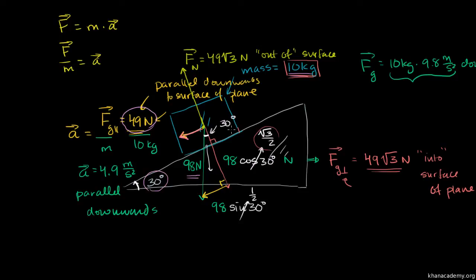We don't see this block of ice accelerating downwards into this wedge because the wedge is supporting it. So there must be a counteracting force that the wedge is exerting on the block — the normal force of the wedge on the block of ice, which is exactly opposite to the force of gravity in the perpendicular direction. These completely balance each other out, which is why the block is not accelerating in that direction.